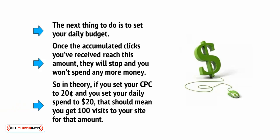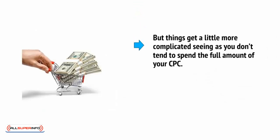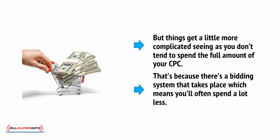So in theory, if you set your CPC to $0.20 and you set your daily spend to $20, that should mean you get 100 visits to your site for that amount. But things get a little more complicated, seeing as you don't tend to spend the full amount of your CPC — because there's a bidding system that takes place, which means you'll often spend a lot less.